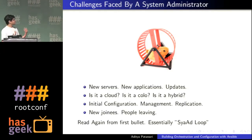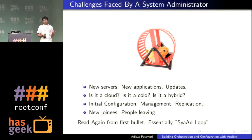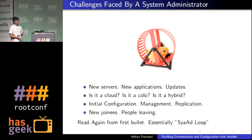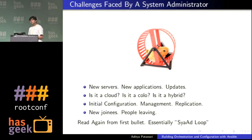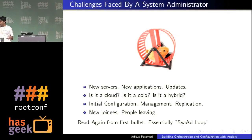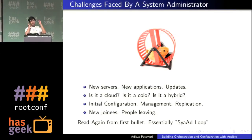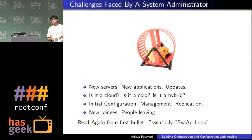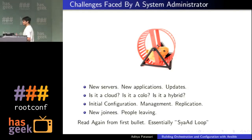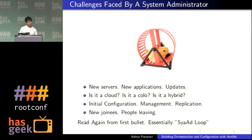You have to worry about initial configuration. Say you're asked to get an Nginx server up — you have to make sure installation goes smoothly, configuration goes smoothly, and if you're running a Rails application, your Passenger or Unicorn coupling with Nginx goes smoothly. Entire user management, application management. And tomorrow if you spawn another Nginx, it should be exactly the same as your existing machines. You don't want half your machines running Nginx 1.0 and the other half running Nginx 1.4 — that can lead to serious nightmares. It essentially becomes a loop; you keep doing this over and over again. Without a good tool, this can become your 24/7/365 job.